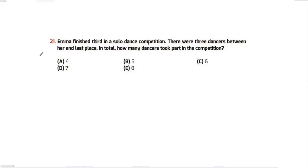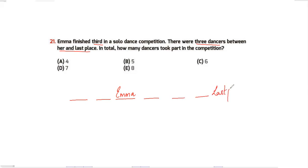Question 21: Emma finished third in a solo dance competition. There were three other dancers between her and last place. In total, how many dancers took part in the competition? Emma is third, and there are three dancers between her and last place. Counting: one, two, three, four, five, six, seven — there were seven people in the competition. My answer for question 21 is option D.